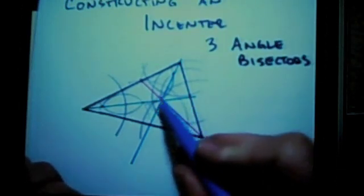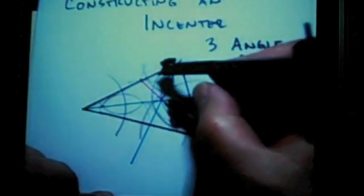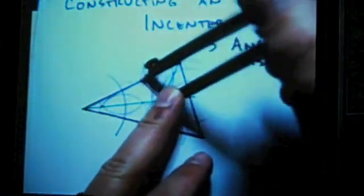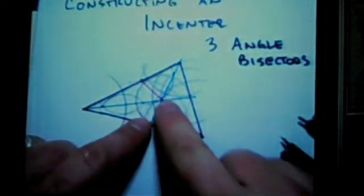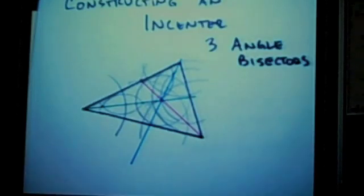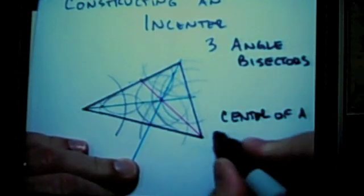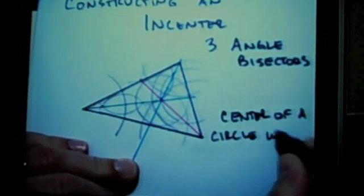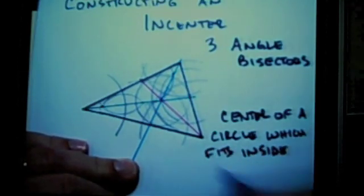So these three lines meet at a point of concurrency, a single point of intersection. I should be able to now take my compass, and using that as a center point, and measuring the distance to the sides, I should be able to construct a circle on the inside of this triangle such that all the sides are the same length away. This is the value of an in-center. It becomes the center of a circle which fits inside the triangle.